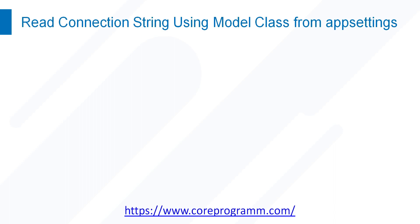Welcome to Core Program. In this video we discuss how to read the connection string using a model class from the appsettings.json file. In our previous video session, we already discussed how to read the connection string inside startup.cs from the appsettings.json file in ASP.NET Core.